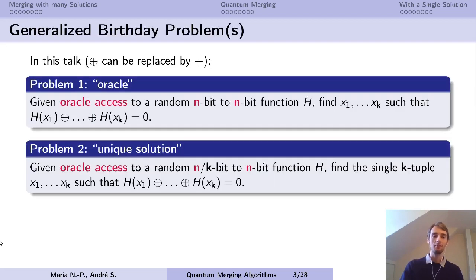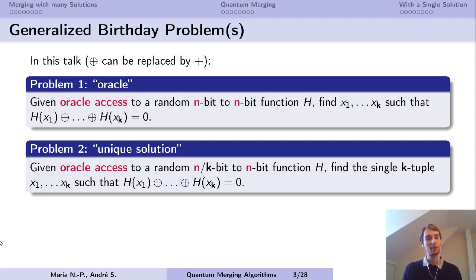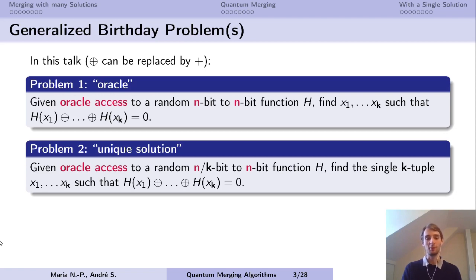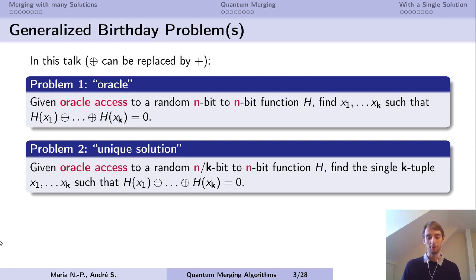Originally the main idea was to solve the generalized birthday problem. We're going to consider oracle versions of these problems, where we are given oracle access to a random n-bit to n-bit function h. The first case is where there are many solutions — we're looking for k elements such that their image XORs to 0. The second problem is where there is a unique solution, restricting the inputs of h to n over k bits to find the single solution tuple. The x-XOR-0 can be replaced by modular additions everywhere. Originally the problem was defined by querying only lists, and we're going to consider an oracle here.